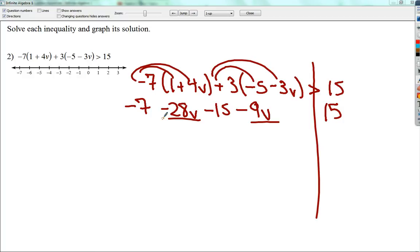So negative 28 minus 9 gives you negative 37v. Negative 7 minus 15 gives you negative 22. Bring down your 15.